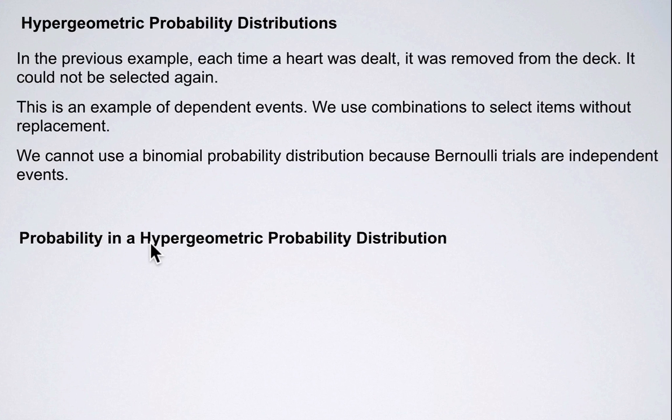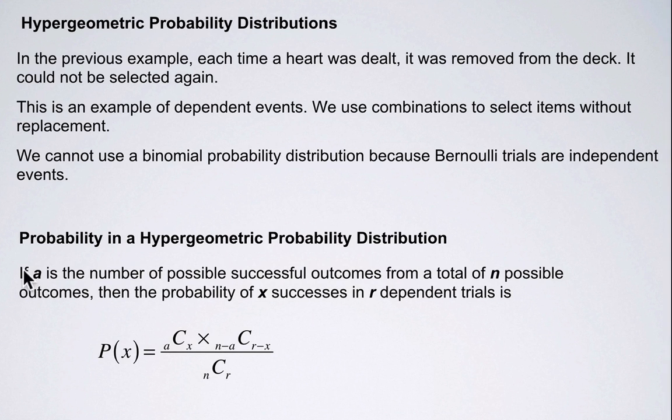The probability in a hypergeometric distribution is given by the formula here. If A is the number of possible successful outcomes from a total of N possible outcomes, in the case of the situation we just saw, the number of possible successful outcomes would be the number of hearts, and the total number of possible outcomes would be 52, the number of cards in the deck. Then the probability of X successes, so that would be 0, 1, 2, or 3, depending on whether we were interested in 0 hearts, 1 heart, 2 hearts, etc. And our dependent trials would be the number of cards you dealt, which would be 3 in the case we just saw.